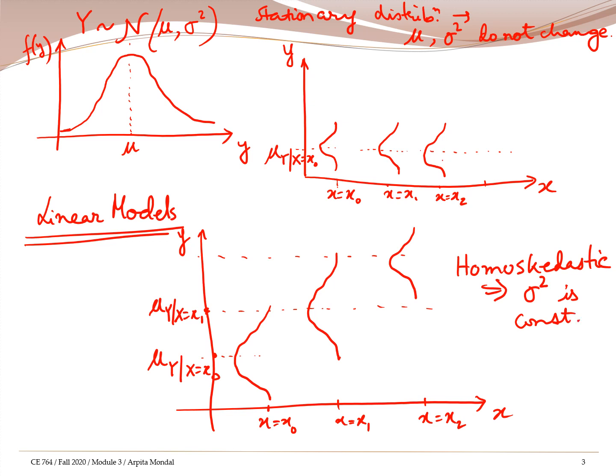This is what happens in simple linear regression. The population distribution of y, which is a normal distribution, changes with different levels of x. The change is only with respect to the mu parameter — the location parameter — while the scale sigma-squared remains constant.